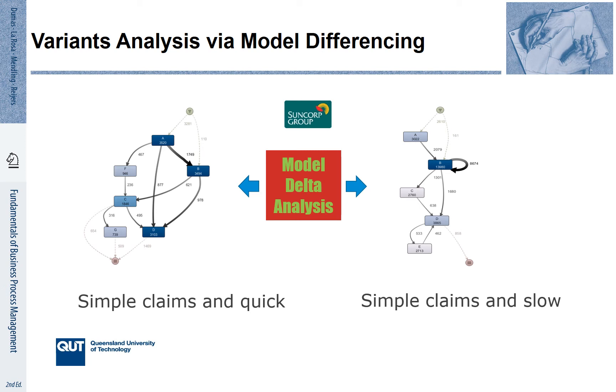Variance analysis was used to find out about the root causes of this. Here, we see two abstracted process models that stem from this analysis. Even though we cannot read the actual name of the activities, we see that the processes are different. On the left-hand side, the simple and fast claims are those that are actually straight-through processed. From A, activities B, F and D are triggered, and the process continues with activities C and G as well. This leads to completion.